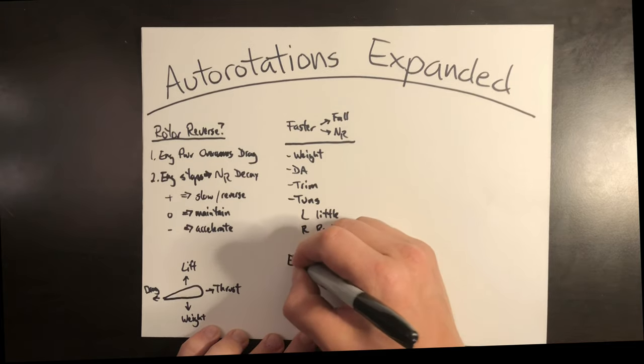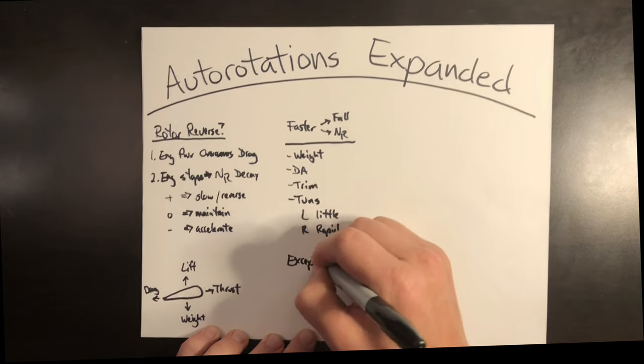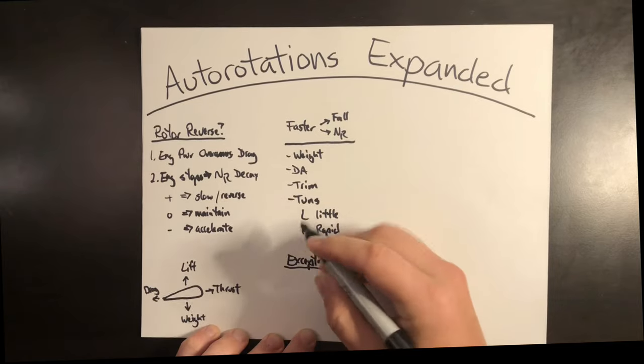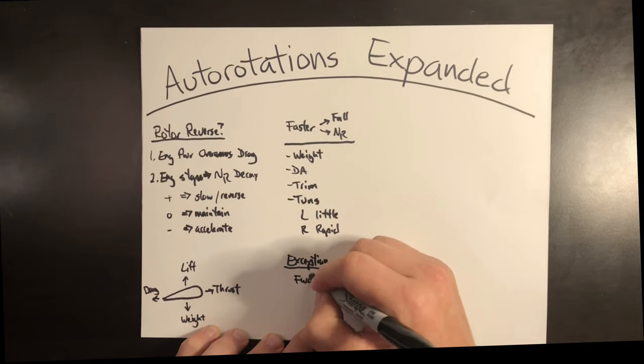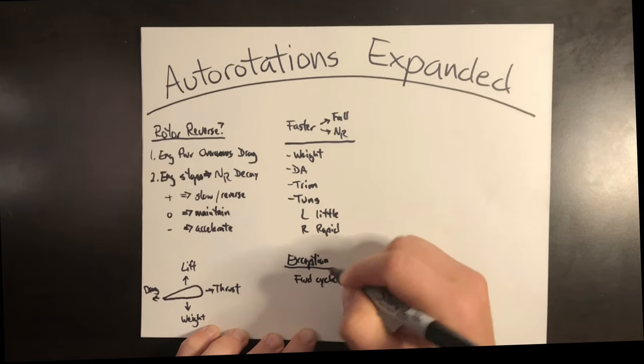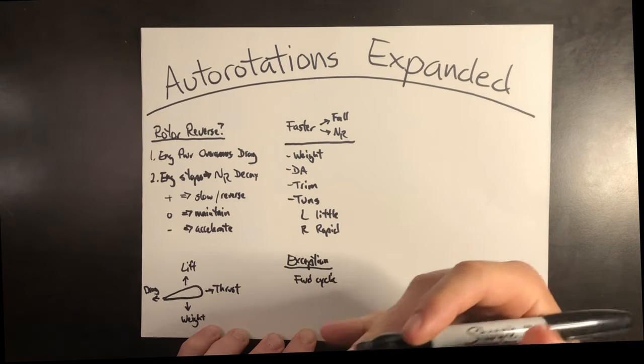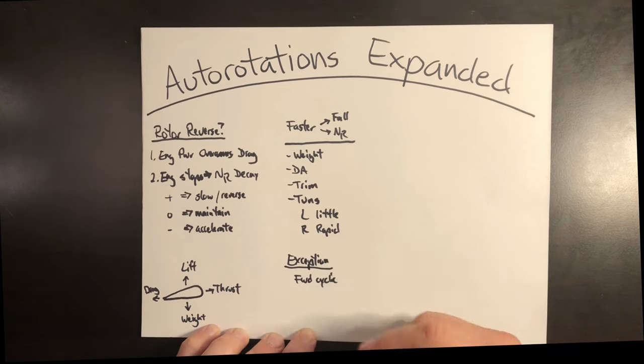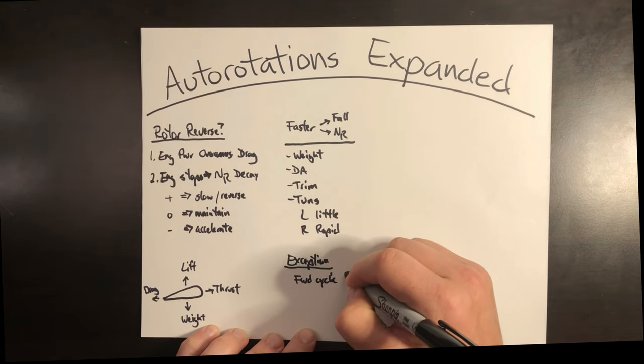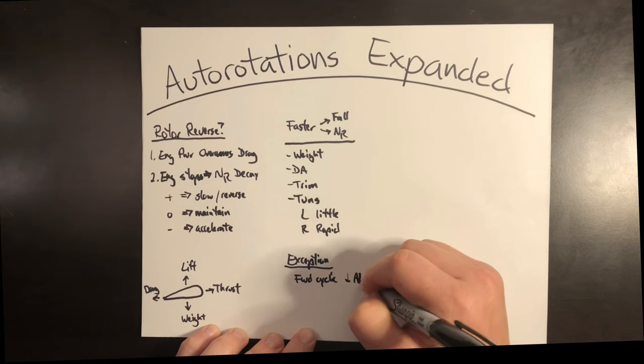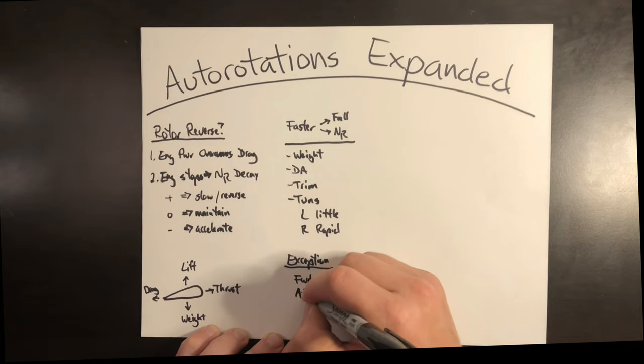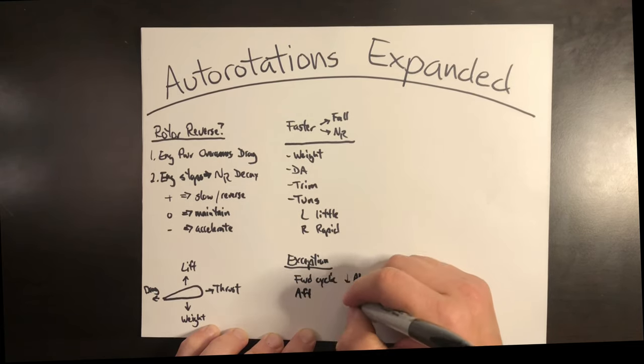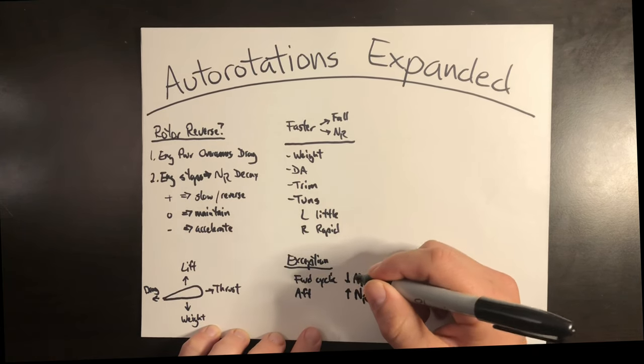Now, an exception to this rule is going to be forward and aft cyclic. Forward cyclic will slow the rotor and increase the rate of descent, while aft cyclic will increase the rotor RPM and decrease the rate of descent. So once again, forward cyclic drops rotor and aft cyclic will increase rotor.